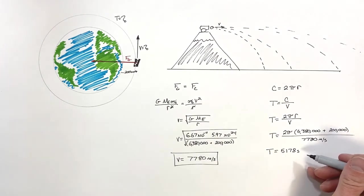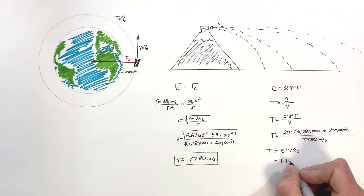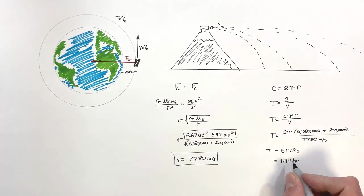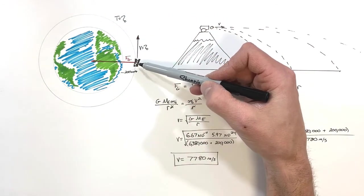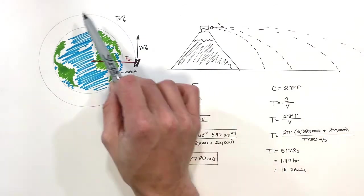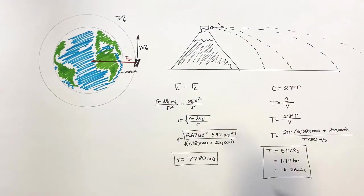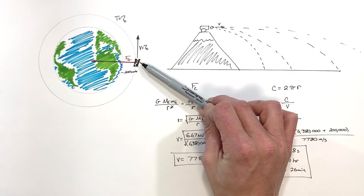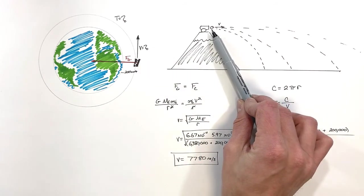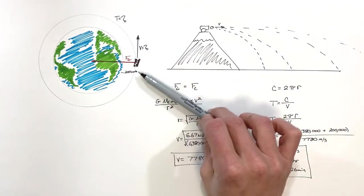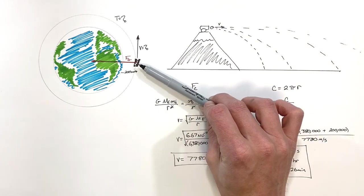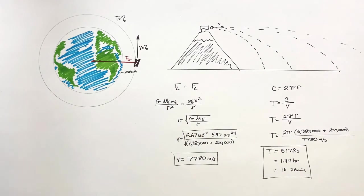Converting that figure: 5,178 seconds is approximately 1.44 hours, or about 1 hour and 26 minutes. This satellite in low Earth orbit — close to the Earth's surface — takes roughly an hour and a half to go around the Earth. In summary, the satellite is mechanically no different from a horizontally fired cannonball that keeps missing the Earth, which allowed us to solve both its orbital velocity and its period.